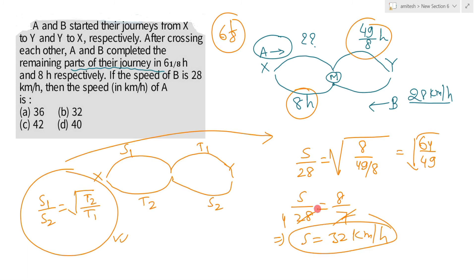So our answer is option B: 32 km per hour. I have given the link to the proof in the I-button — do go and check it out. Thanks for watching the video.